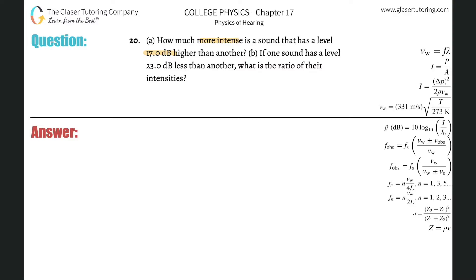In order to answer this question, let me look at this formula and rework it a little bit. This says that the sound level intensity, aka beta, is going to be equal to 10 multiplied by the log base 10 of basically the intensity divided by the hearing threshold, which is essentially 10 to the minus 12.